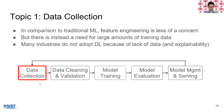Topic one is data collection. In comparison to traditional machine learning, deep learning requires less feature engineering but instead needs large amounts of training data. Many industries unfortunately do not adapt to deep learning simply because of the lack of data — the second reason being the lack of explainability of the models. So data collection is extremely important.